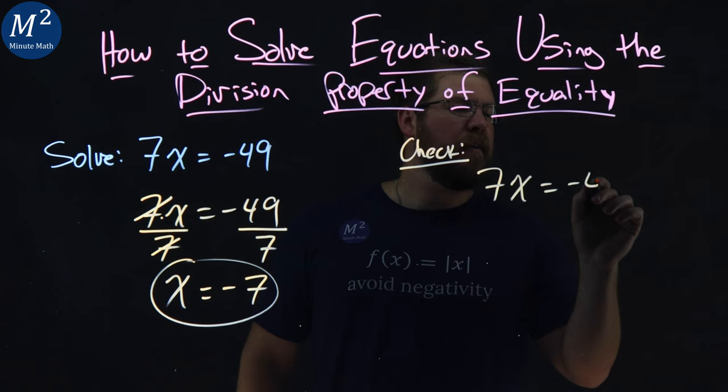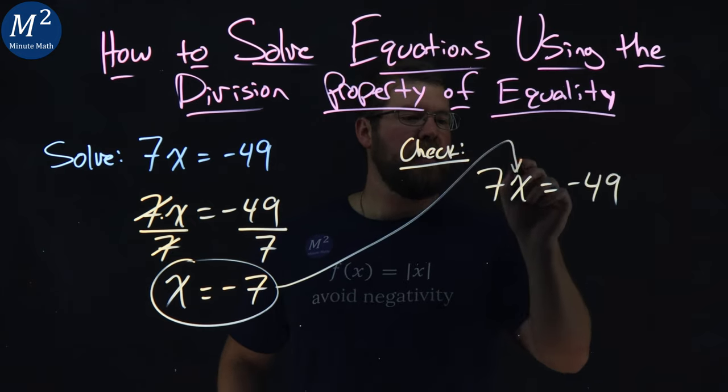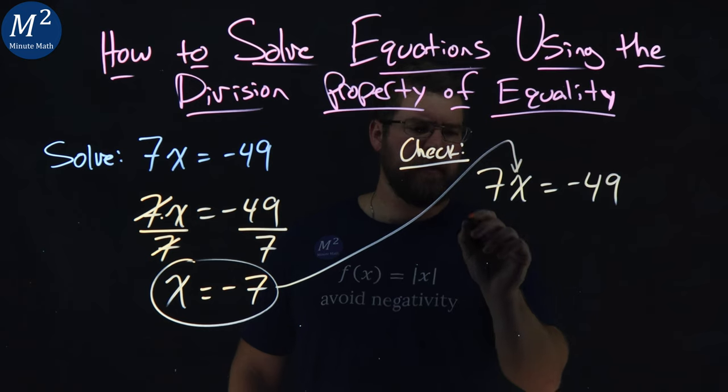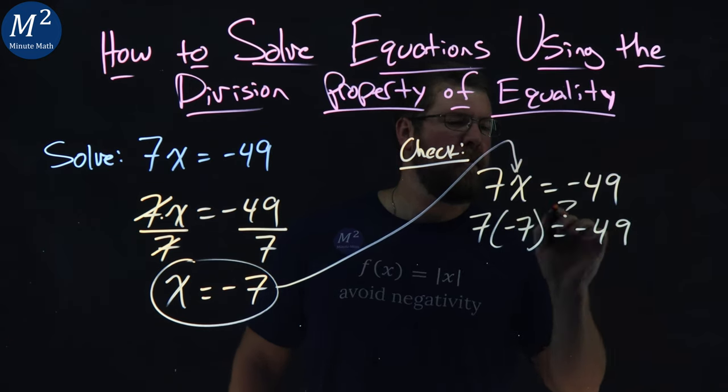Now I want to take this negative 7 and plug it in for x. 7 times negative 7 equals negative 49. Is this true?